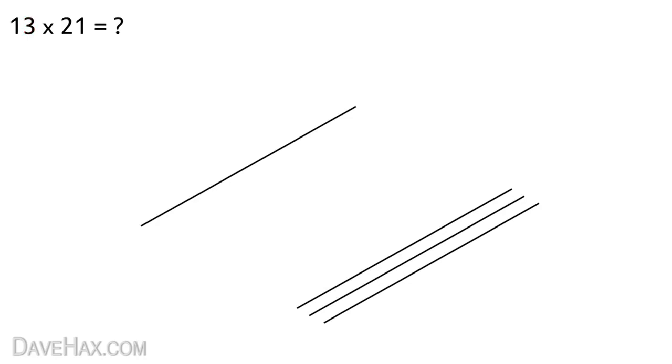After the multiplication sign, the first number we have is 2, so we draw two lines next to each other from here to here. And the final digit is 1, so we draw one line from here to here. That's the first part complete and it should look something like this.